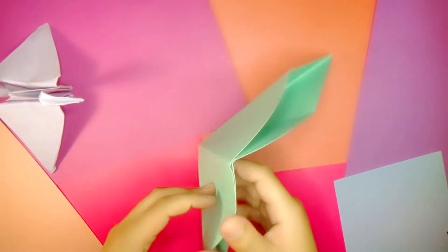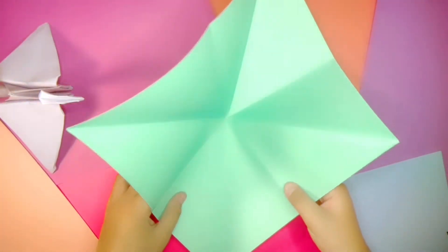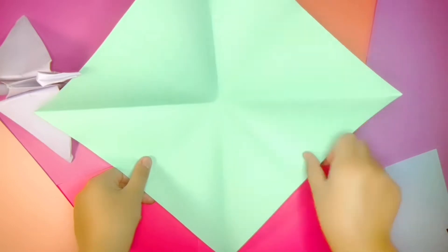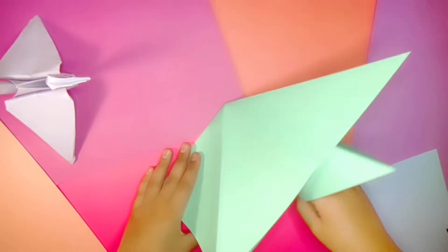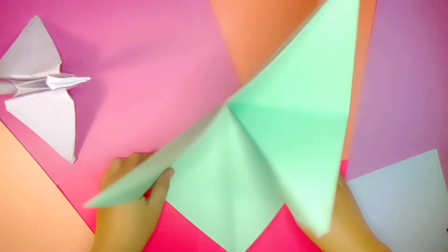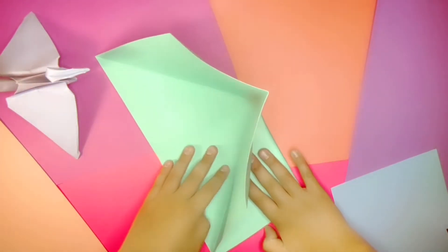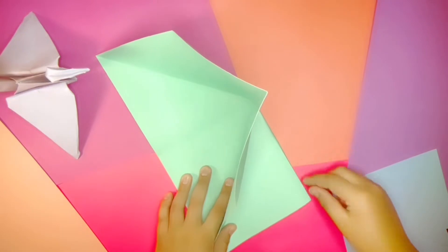Now we're gonna open it up and do the accordion fold. Bring the two side corners in to meet the corner on the table that's pointing at you. Like so.